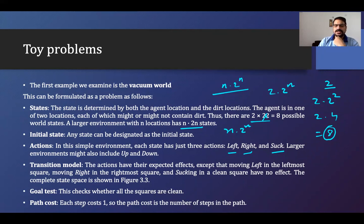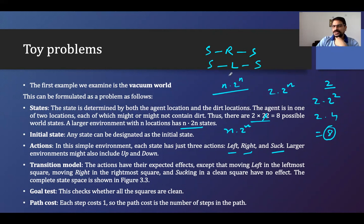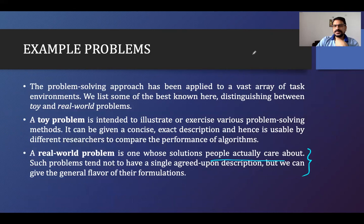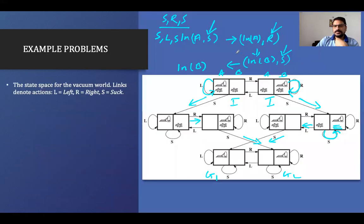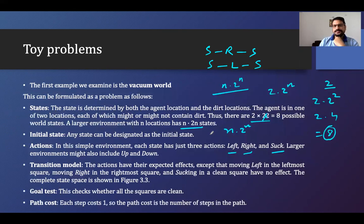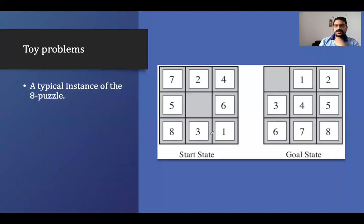The goal test checks whether all squares are clean. The path cost: each step costs one, so the path cost is the number of steps taken. For example: suction, move right, suction — that is one solution. Or suction, move left, suction — another solution. Either way, we have made three state changes, so the cost is three.